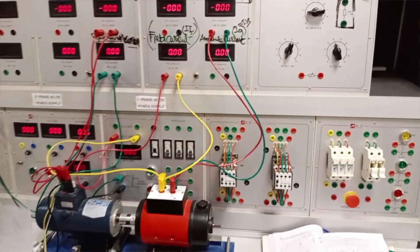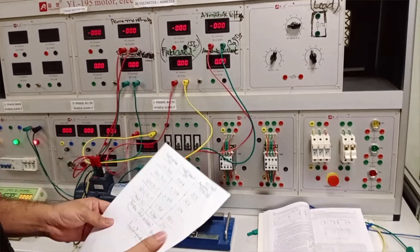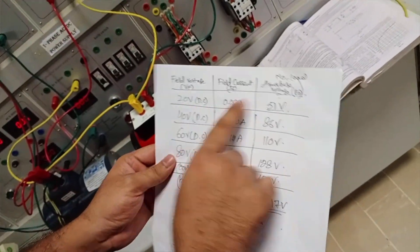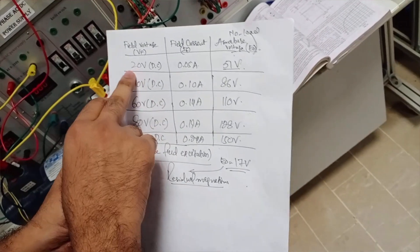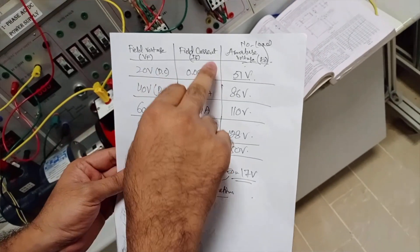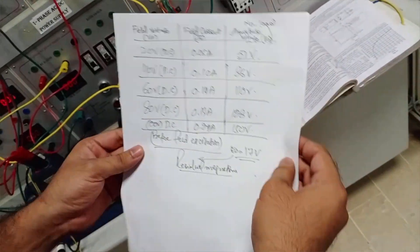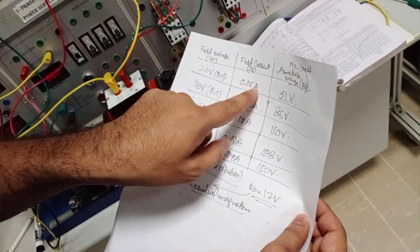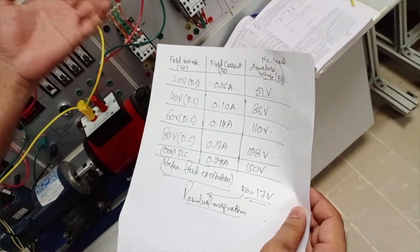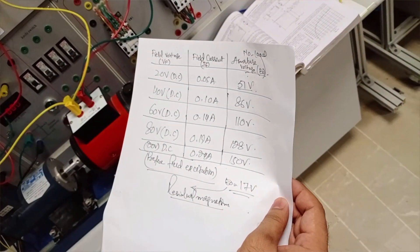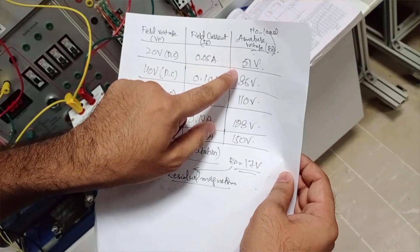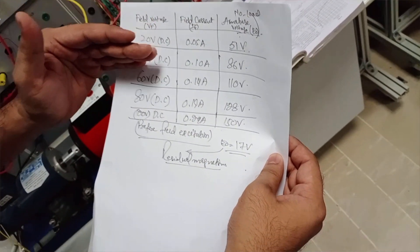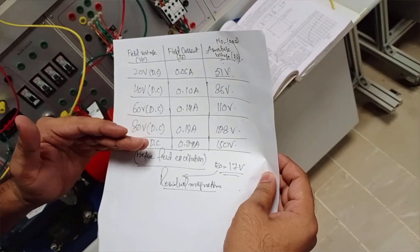We take different values at different DC voltages and measure the corresponding field currents. At 12 V DC, we obtain 0.05 A of field current, and the armature voltage increases as we increase the field excitation voltage.